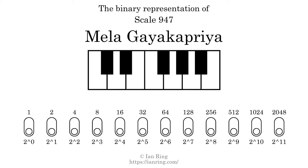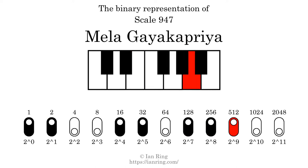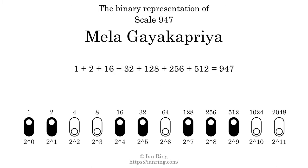The binary representation of this scale is determined by mapping tones of the scale to binary digits. Each binary digit represents a power of 2. To get the scale number, we add the powers of 2 together. The powers of 2 that are present in the scale, all added together, equals 947.